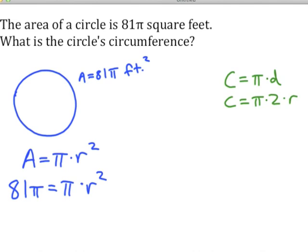This looks more complicated than it is. On both sides of the equation we have π. Remember π is just a number, so we can divide both sides by π. That leaves us with 81, because π divided by π is 1. Therefore 81 equals r².